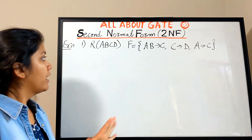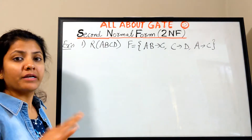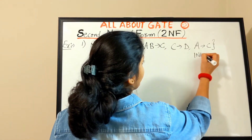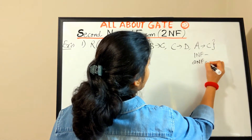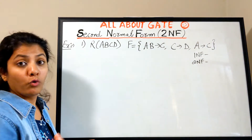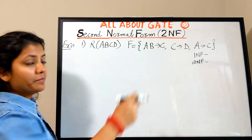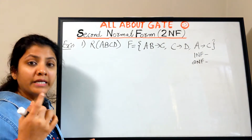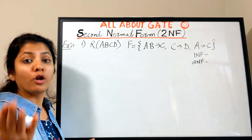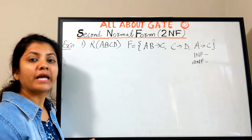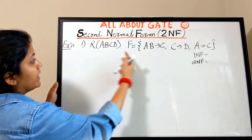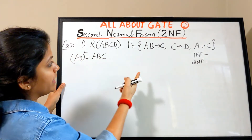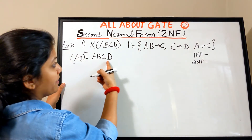Now let's solve a question: find which normal form a given relation is in. We have understood 1NF and 2NF so far, so let's check which of the two this relation satisfies. A relation with attributes A, B, C, D is given. The functional dependency set is given. Let's find the candidate key: AB+ gives ABC, then C gives D, so AB closure gives ABCD — AB is a super key.